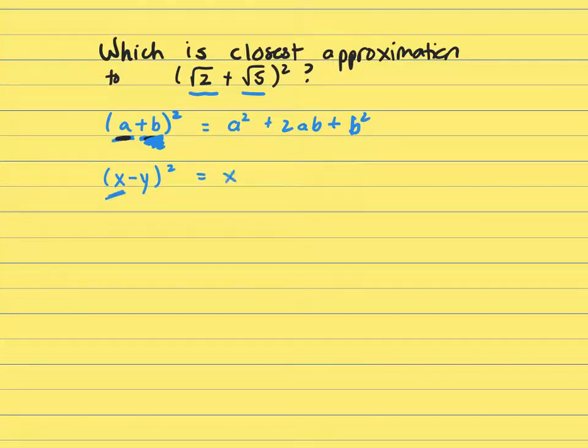Square your first term. Copy down that sign. Multiply x times y, and then multiply it by two, and that gives you 2xy. Last term is always positive. Square your last term.